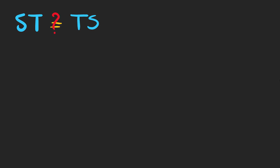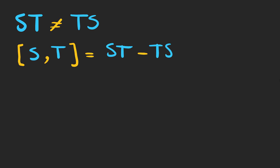Suppose we have two matrices S and T. The question is: is matrix multiplication commutative? Unfortunately, it's not always the case. It's useful to define the commutator of two linear transformations, which shows the difference between ST and TS. If the commutator is zero, S and T are commutative.